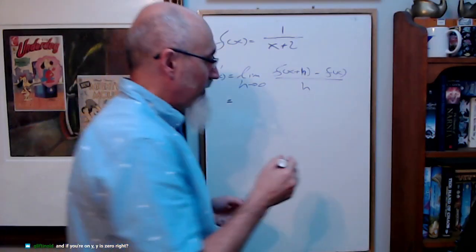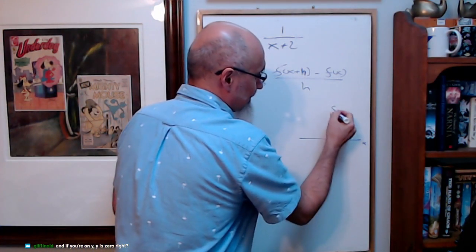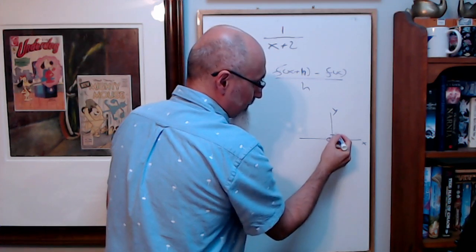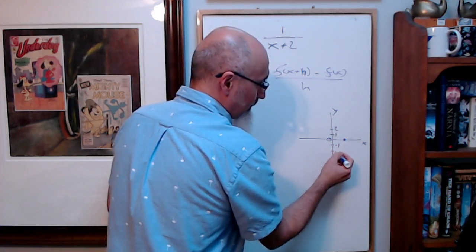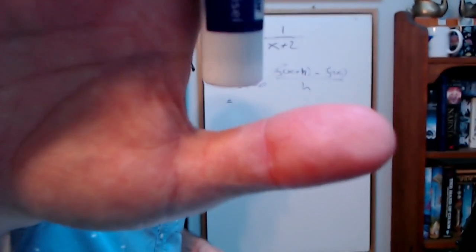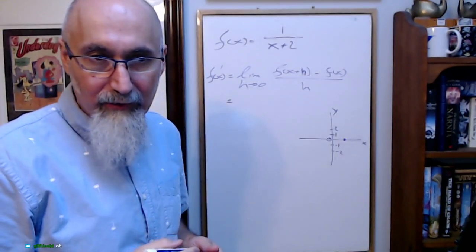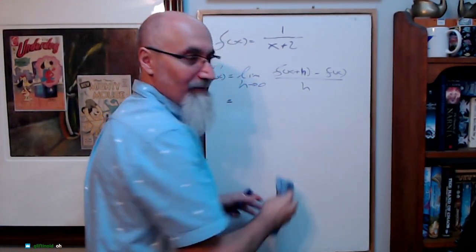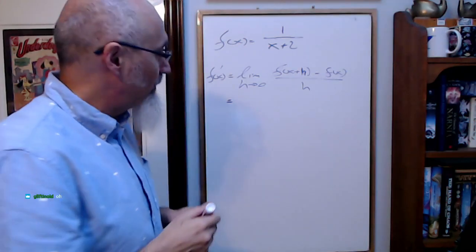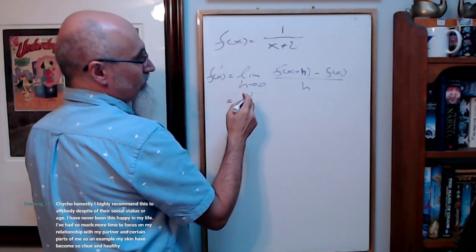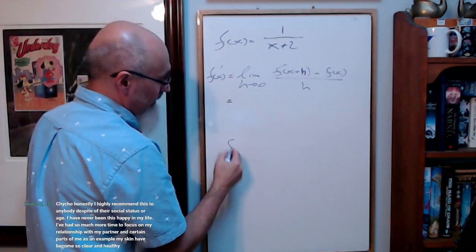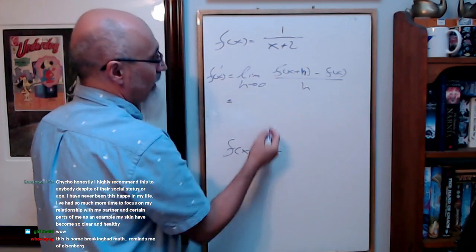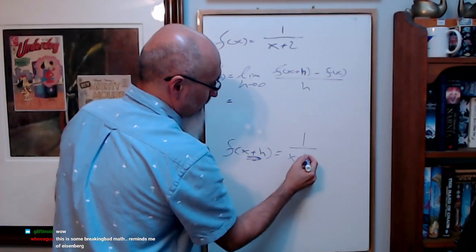On a graph: if you're on the x-axis, y is zero; if you're on y, x is zero. It's a common mistake — it just feels like you want to say x is zero, but it's y is zero. So substitute x plus h in for x: f of x plus h means substitute in, so that becomes one over x plus h plus two.